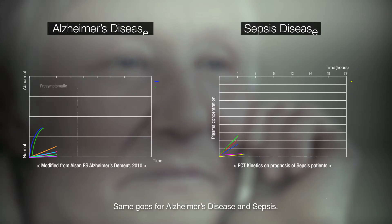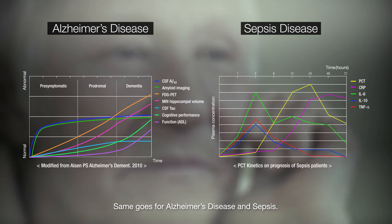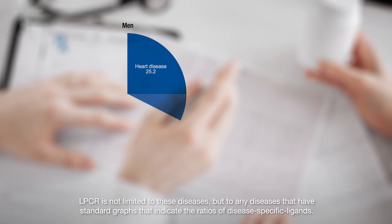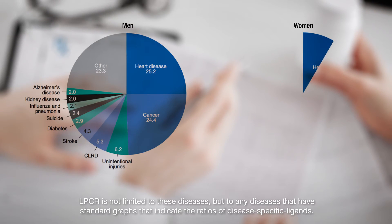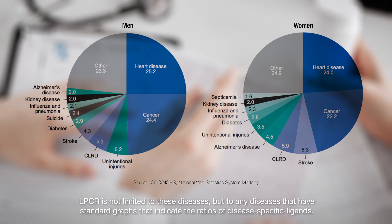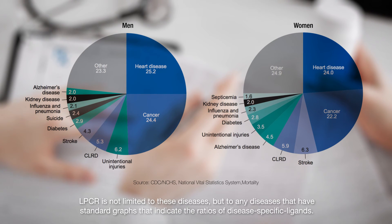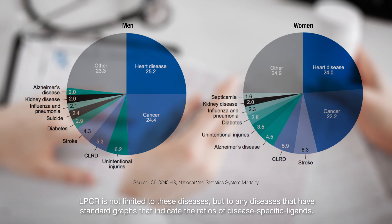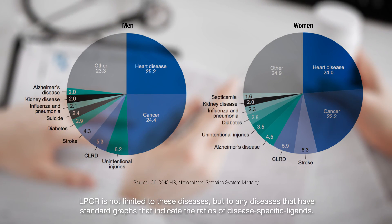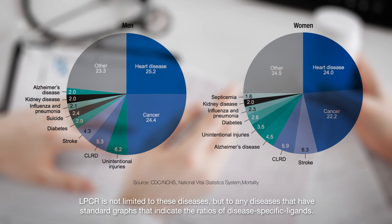The same goes for Alzheimer's disease and sepsis. LPCR is not limited to these diseases, but to any diseases that have standard graphs indicating the ratios of disease-specific ligands.